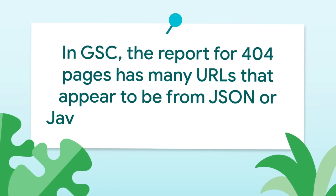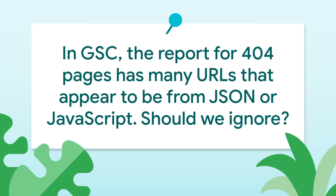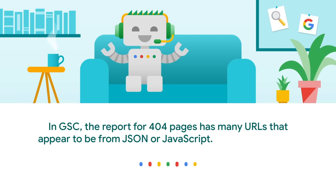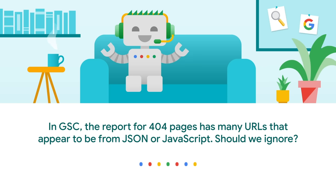Reza is asking: in GSC, Google Search Console, the report for 404 pages is filled with URLs that appear to be somehow picked up by mistake from within some JSON or JavaScript code. Should we ignore this? Well, you can ignore those or just add a noindex HTTP header for them, but you can just ignore them, really.